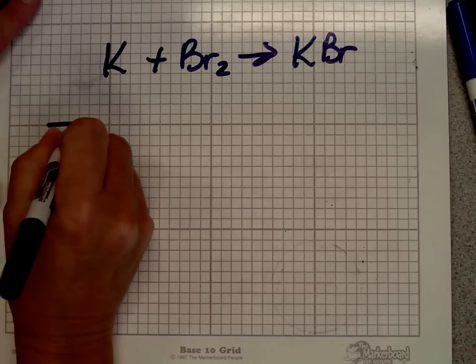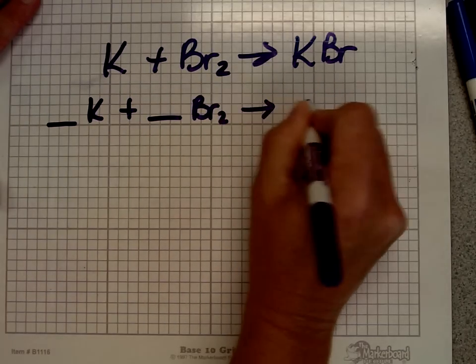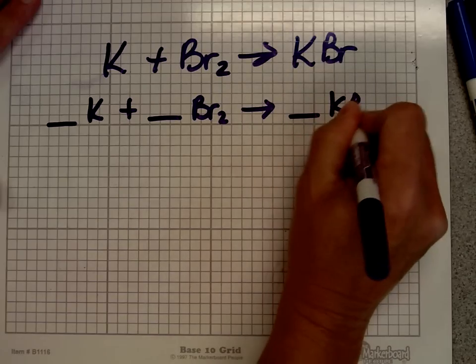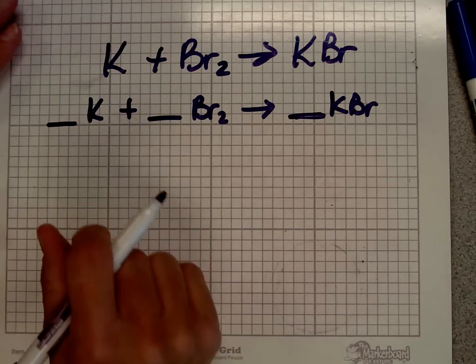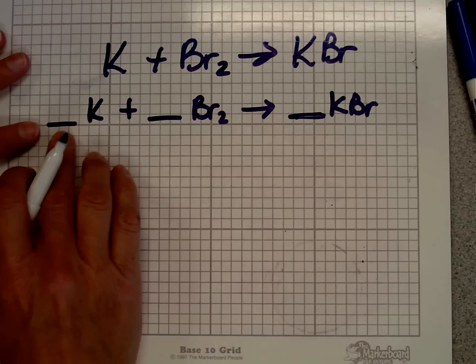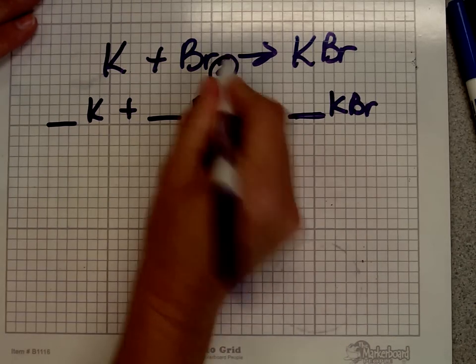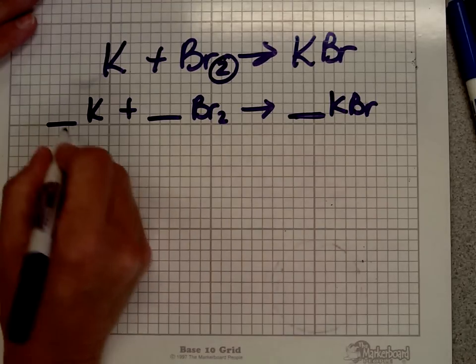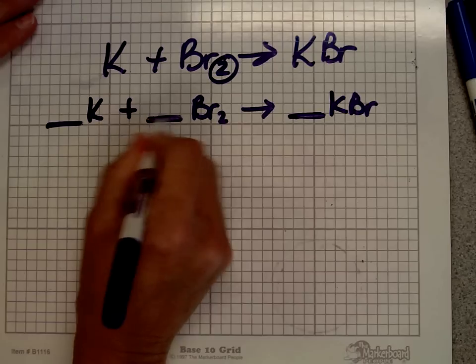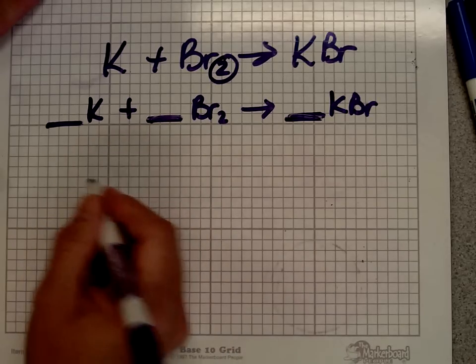First step in balancing it is to give yourself a little bit of room to write. So I like to rewrite my equation, putting blank lines in front of every element or compound in the products and on the reactant side. The reason that I do that is it helps remind me that the only numbers I can change are numbers that I put on that blank line. This little number here, this 2, that's called a subscript. And you can't change that when you're balancing chemical equations. You can only change coefficients. These little blank lines are where the coefficients go. And right now, there's a number on each of those lines. It's invisible, but it's there. That number is 1.